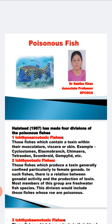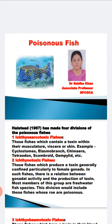A scientist called Halstead, in 1967, categorized the poisonous fishes into four categories. The first is the ichthyosarcotoxic fishes — fishes which contain a toxin within their musculature, that means their muscles are poisonous, as well as their viscera or skin. Examples are the cyclostomes, elasmobranchs, chimera (the ratfish), tetraodont, scombroid, etc.